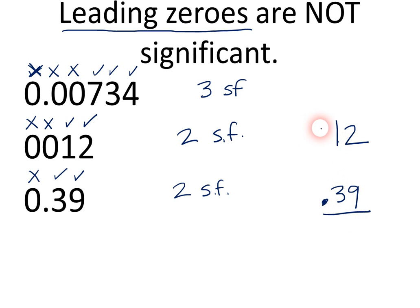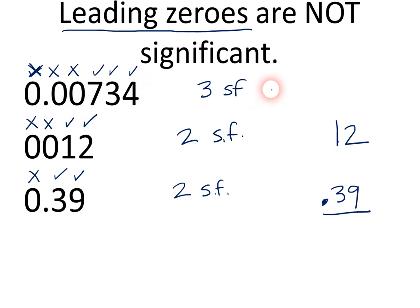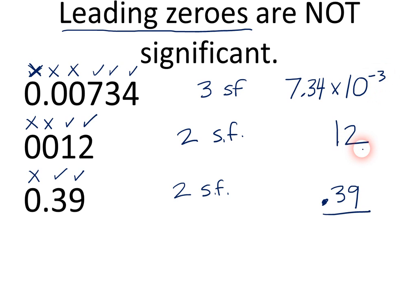Now, some of you might say those leading zeros have to be there because they're placeholders. I would challenge that — leading zeros do not have to be there. Can you think of a way to write 0.00734 without those leading zeros? In our lesson on scientific notation, hopefully you learned that 7.34 times 10 to the negative third is the exact same thing, with no change in value or level of precision. So, leading zeros are not significant.